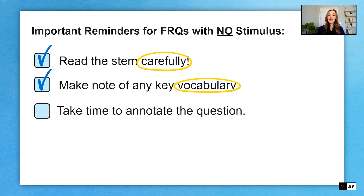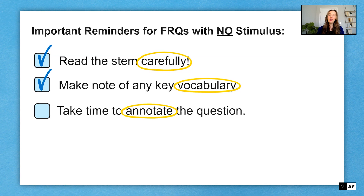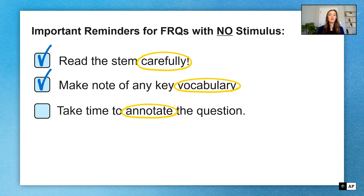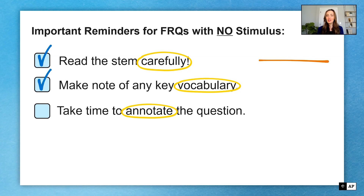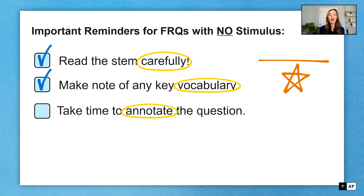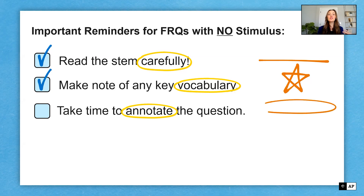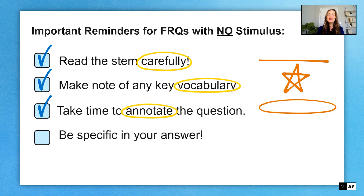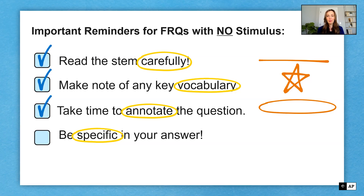Next, take time to annotate the question. You are going to see me doing that today — I'm going to practice that with you, so you'll see what kind of words or terms I choose to focus in on. When you're doing your AP test or writing your answer, you can do this through underlining keywords, starring a key concept you want to come back to, or even circling a key concept you don't want to miss. Next, be specific in your answer. The more specific you can be using key vocabulary or real-world examples, the more you'll show that you really know your stuff.